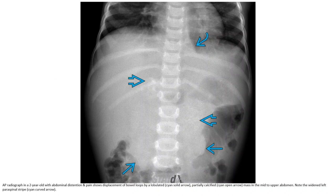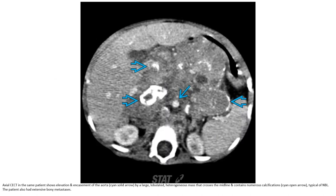Radiograph in a two-year-old with abdominal distension and pain shows displacement of bowel loops by a lobulated partially calcified mass in the mid to upper abdomen. Note the widened paraspinal stripe. Contrast-enhanced CT in the same patient shows elevation and encasement of the aorta by a large lobulated heterogeneous mass that crosses the midline and contains numerous calcifications — typical of neuroblastoma.